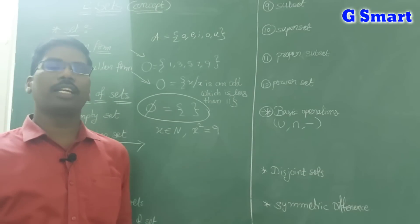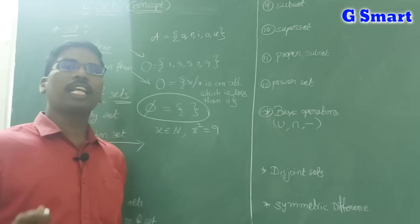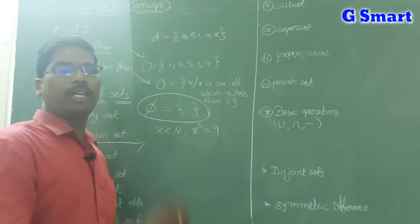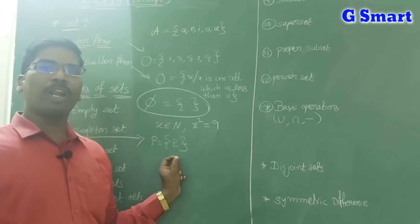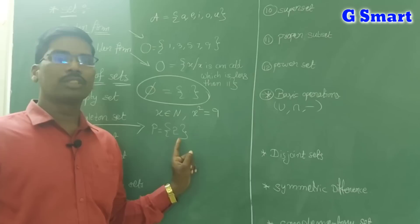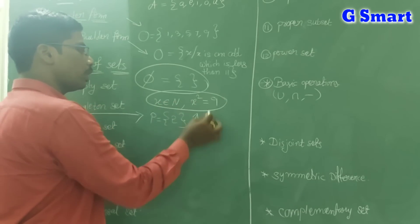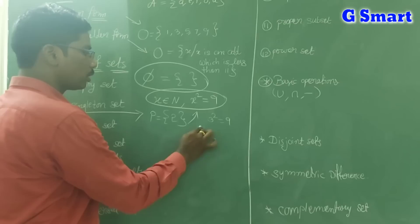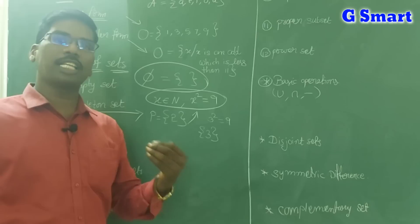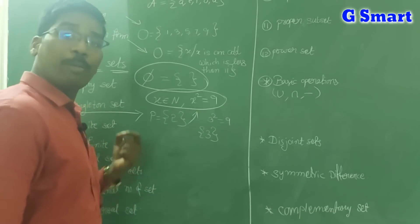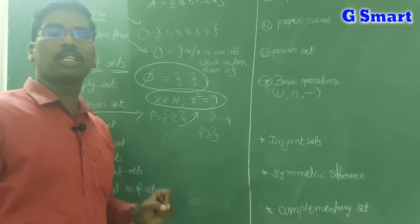Next is singleton set — a set which has only one element is called a singleton set. Example: the set of even prime numbers is a singleton set, because 2 is the only even prime. Also, a natural number less than 1 is an empty set; a man on the moon is an empty set; a boy in a girl's school is also an empty set — a boy will not be there in a girl's school.